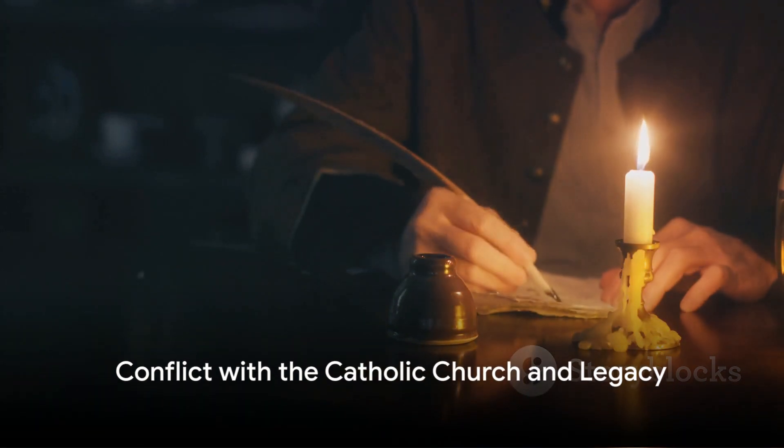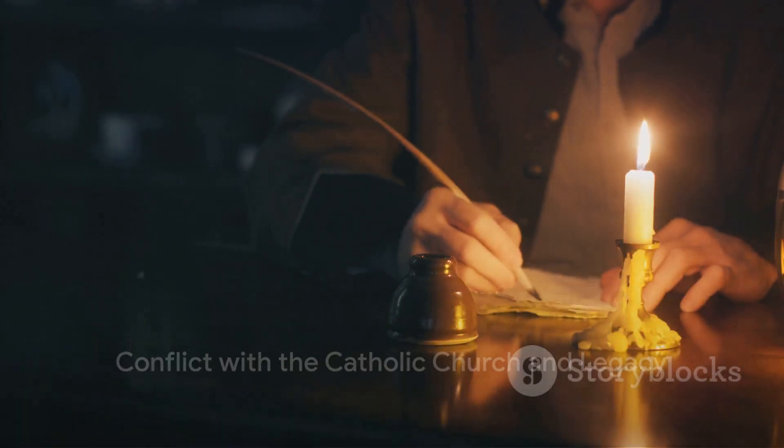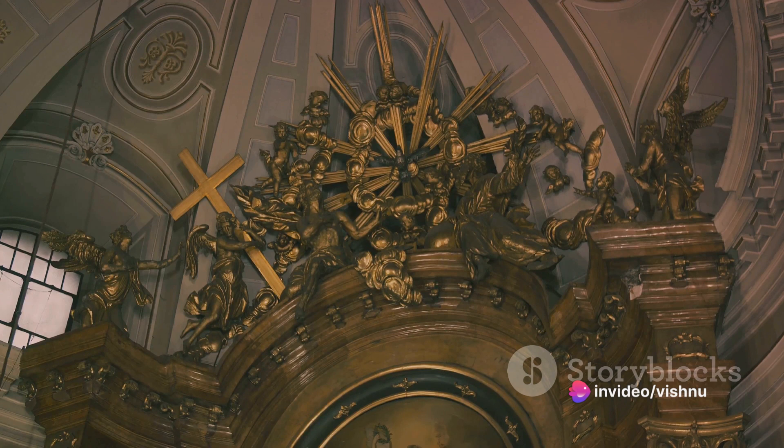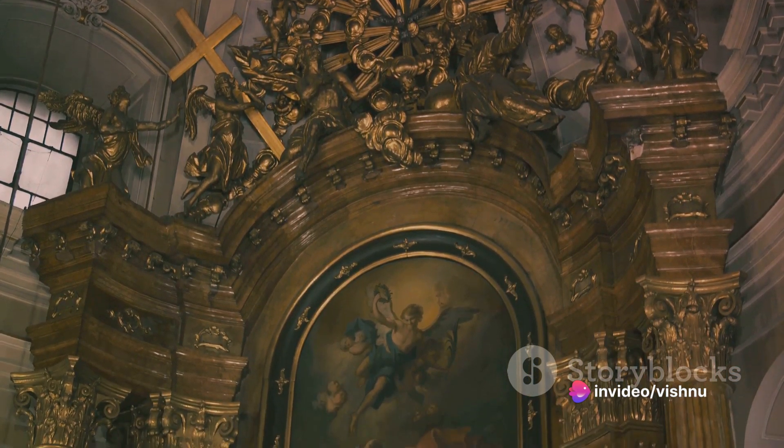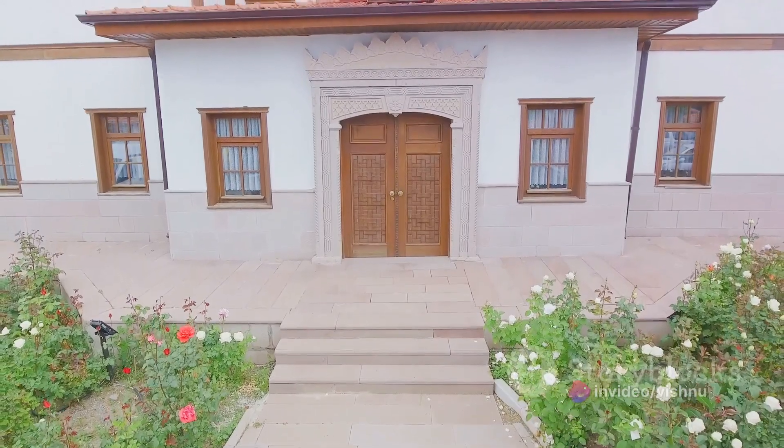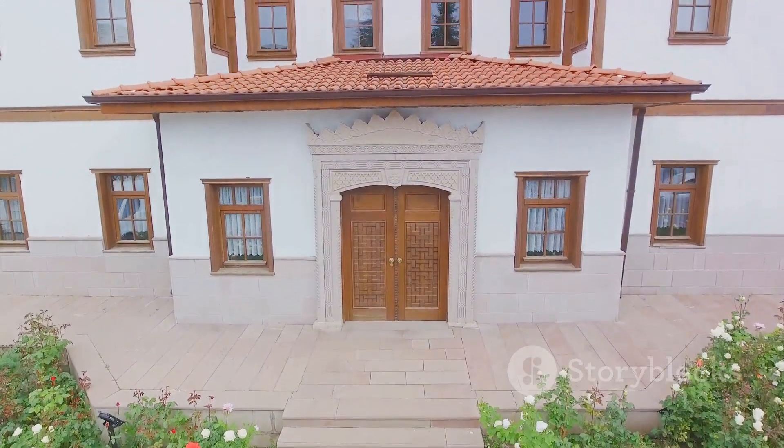During his life, Galileo published his findings in several manuscripts. Most of these earned him the ire of the Catholic Church, which eventually labeled him a heretic. He was sentenced to house arrest for the last years of his life and died on January 8, 1642.